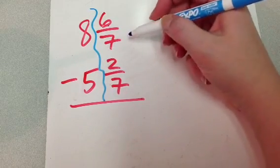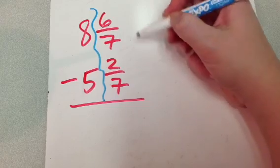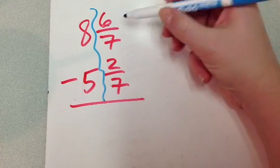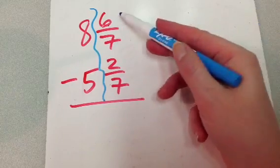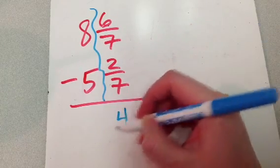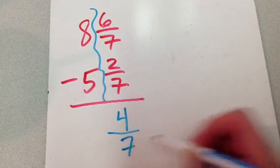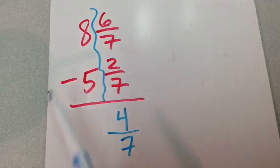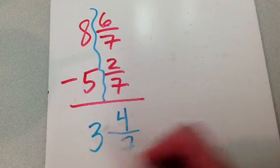So, I'm going to start with my fractions. I've got a common denominator, right? I've got 7 on the bottom of both of those. So, that means all I do is subtract my top numbers. 6 minus 2 is 4. My bottom number stays the same. And then I come over here, and I subtract my whole numbers. 8 minus 5 is 3.